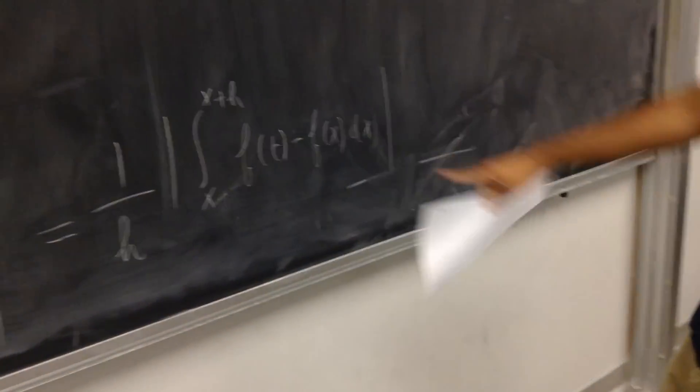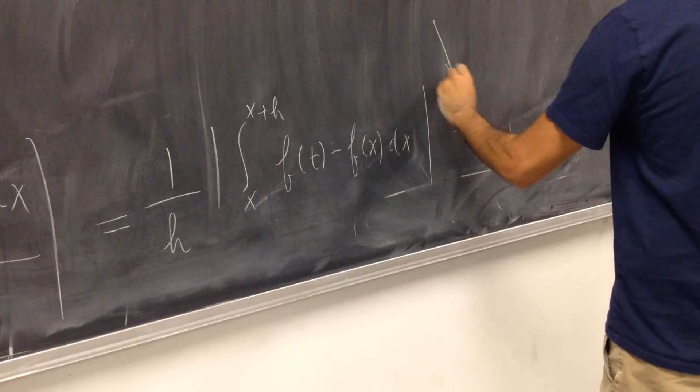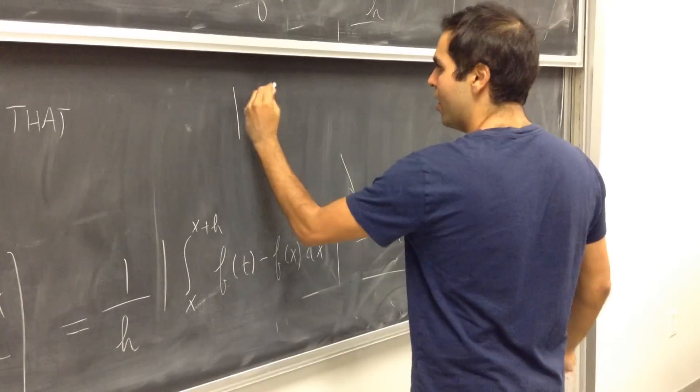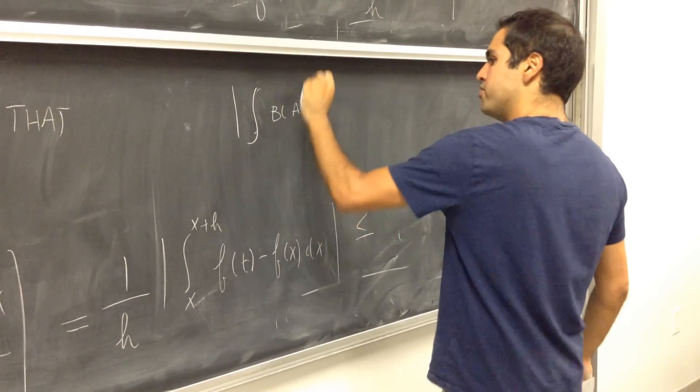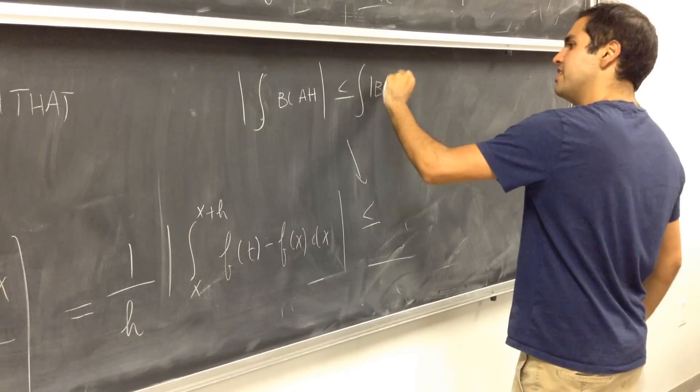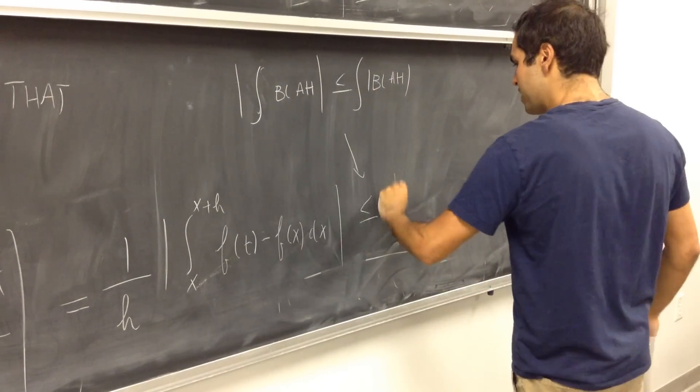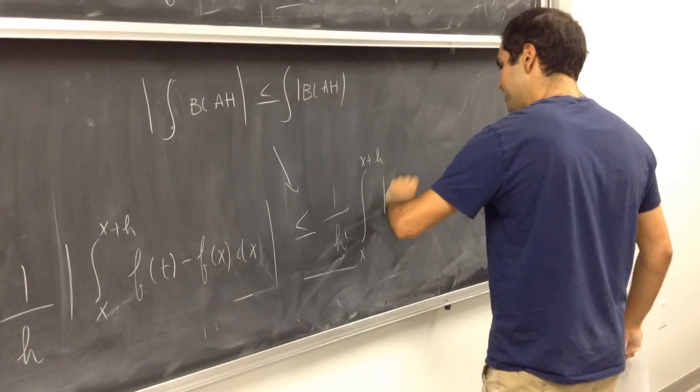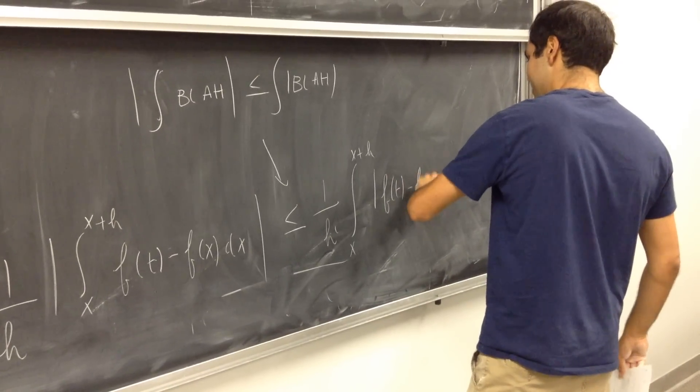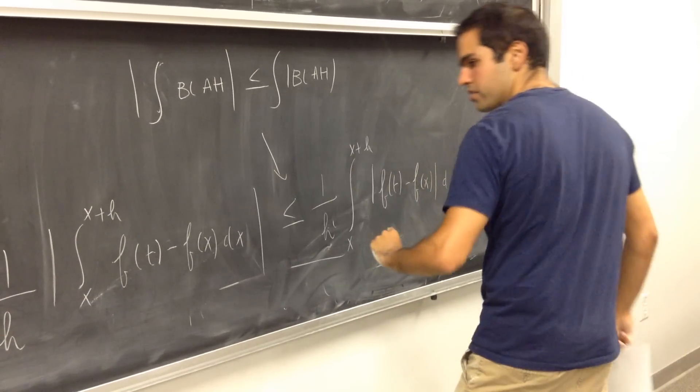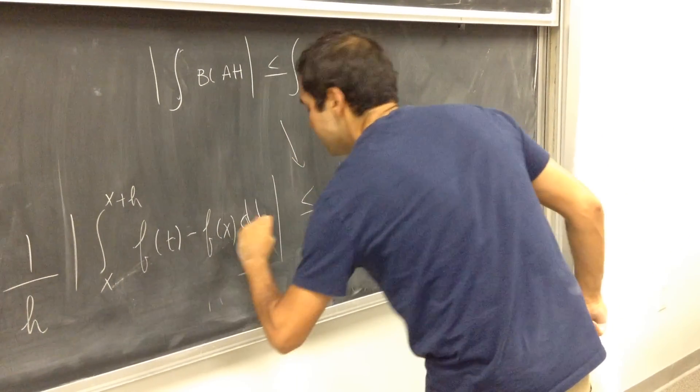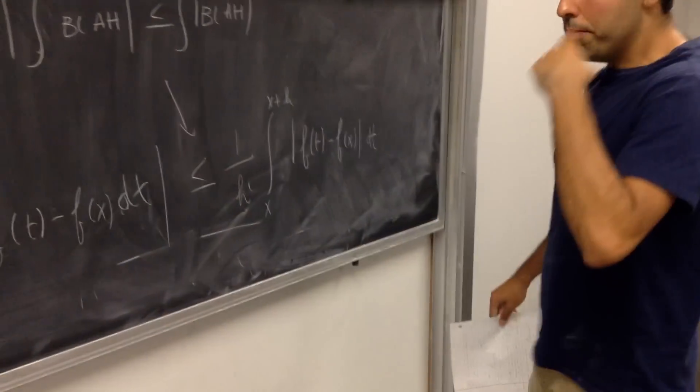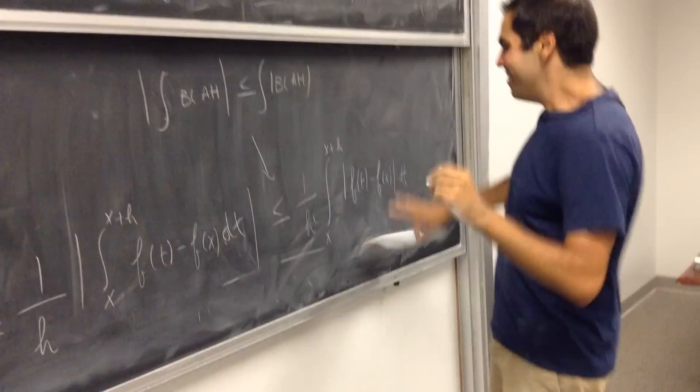Now we want to estimate this, and it turns out there's just one inequality that helps you estimate this, namely it's a triangle inequality, which says that the absolute value of the integral is less than the integral of the absolute value. So this becomes one over h integral from x to x plus h absolute value f of t minus f of x dt.